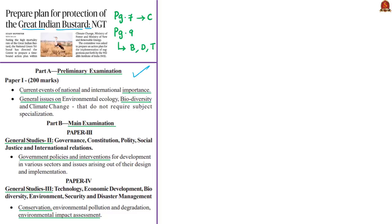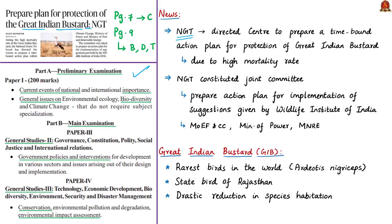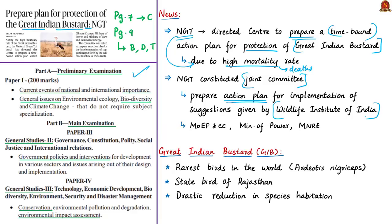The syllabus relevant to this article discussion is given here for your reference. The news article states that the National Green Tribunal has directed the center to prepare a time-bound action plan for the protection of Great Indian Bustards, to be drafted within two months. The NGT has ordered this because of the high mortality rate of the Great Indian Bustards. The NGT bench has also constituted a joint committee to prepare an action plan for the implementation of suggestions given by the Wildlife Institute of India. This committee comprises officials from the Ministry of Environment, Forest and Climate Change; the Ministry of Power; and the Ministry of New and Renewable Energy.